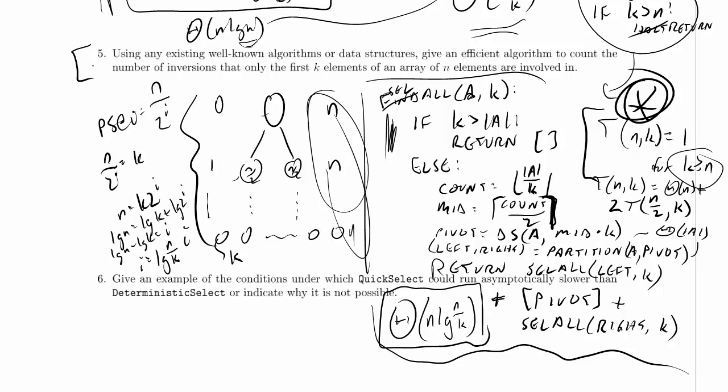Let's work on part 5 of problem 3. I've already used up all the space available for part 5 on part 4, so we're actually gonna have to move this down somewhere. What I'm gonna do is I'm just gonna read the problem first and we'll come back and figure out where we're gonna write the problem after I've read it. So using any existing well-known algorithms or data structures, give an efficient algorithm to count the number of inversions that only the first k elements of an array of n elements are involved in. Let me draw a little picture here.